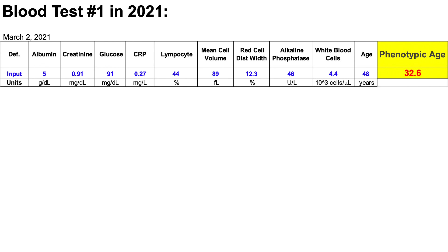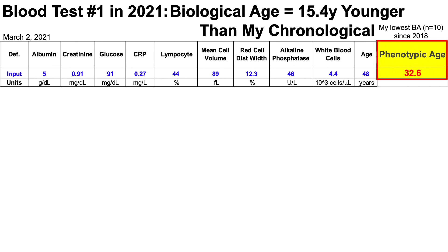On Tuesday, I got my blood tested for the first time in 2021. So what's my data? What's my biological age? We can see here the nine variables and chronological age of Levine's phenotypic age calculator, which is a measure of biological age. Based on these data, my phenotypic age, also known as biological age, is 32.6 years, which is 15.4 years younger than my chronological age of 48. Note that this is my lowest biological age over 10 measurements since 2018, so I'm on the right track.